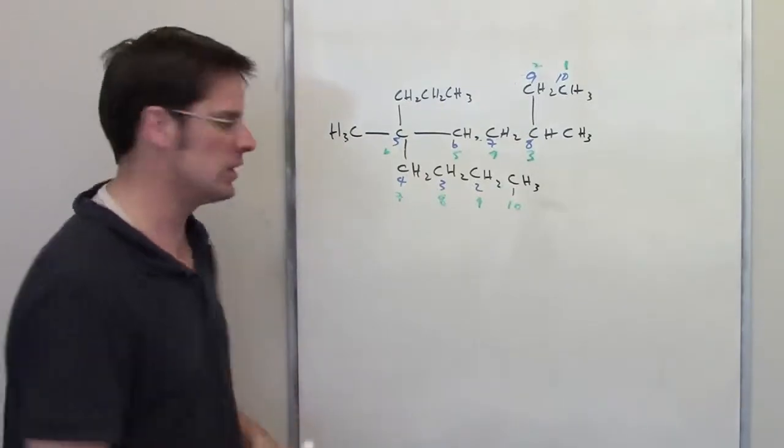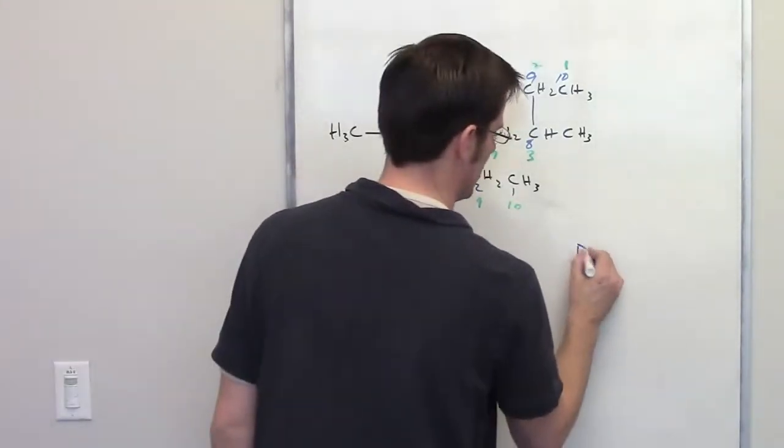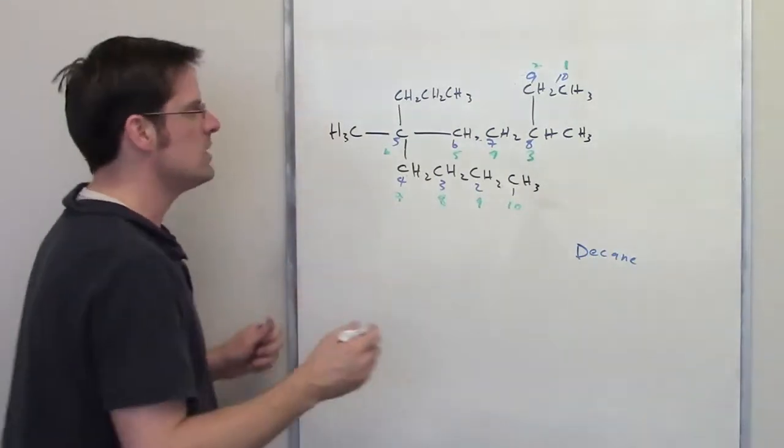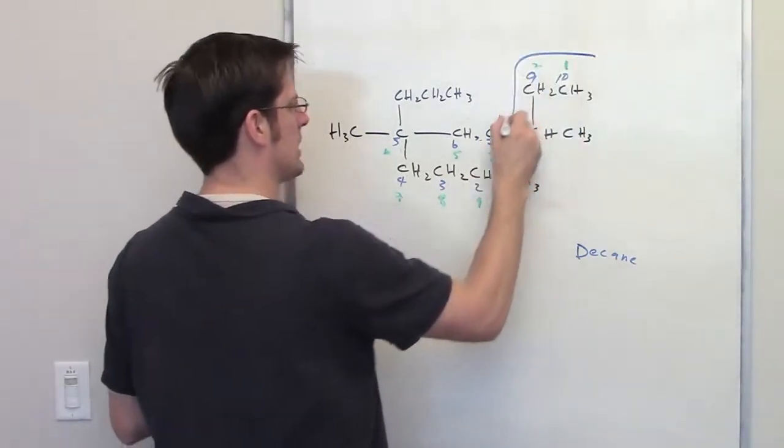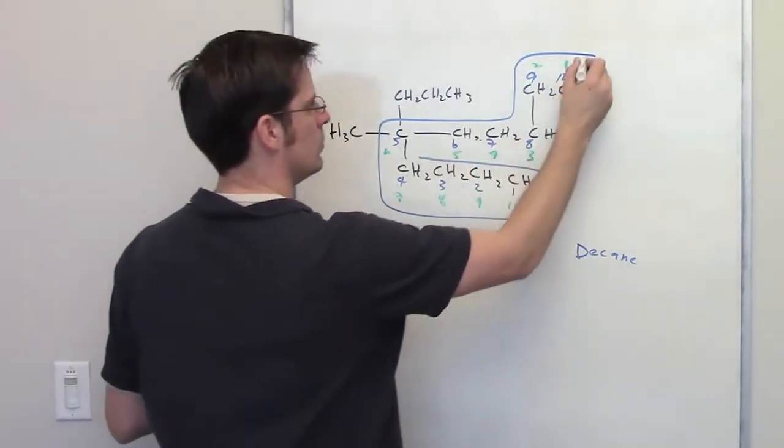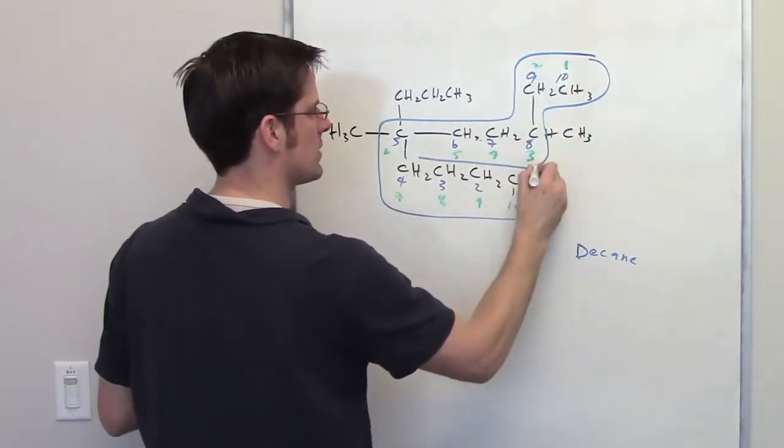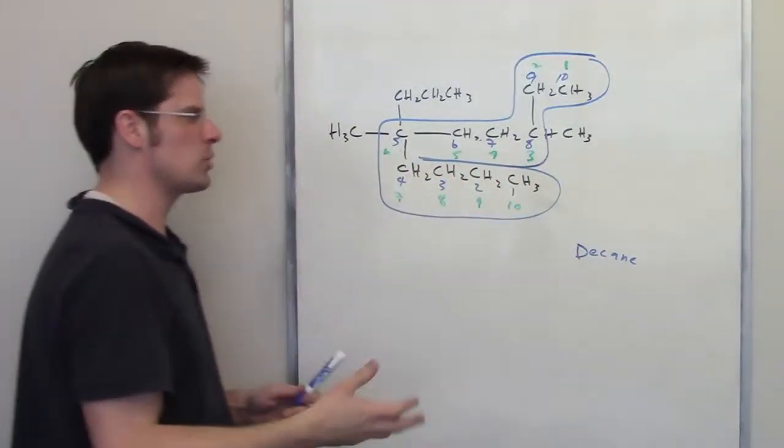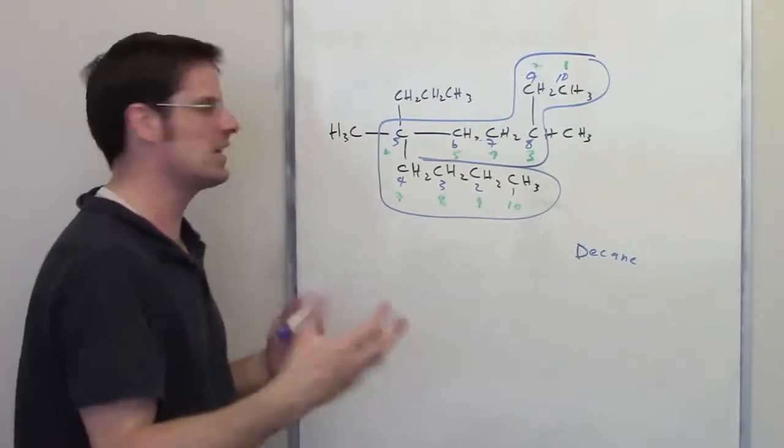Foremost, let's see if we can come up with a name for this chain. 10 carbons. A 10 carbon long chain is called decane. So that will be the parent chain name. We just need to identify the substituents. So what I'm going to do is circle our 10 carbon long chain like this. That's our 10 carbon long chain right there.